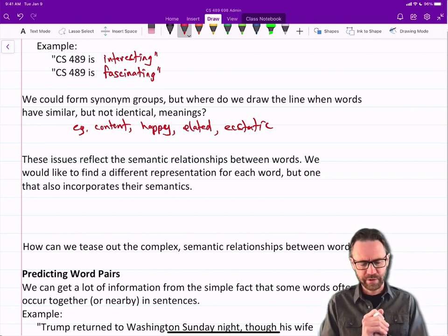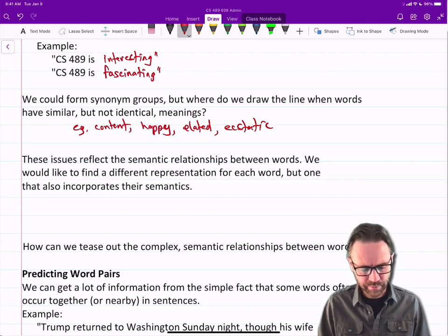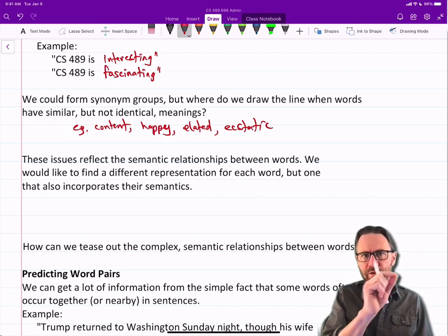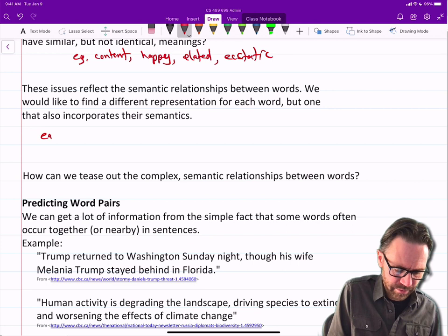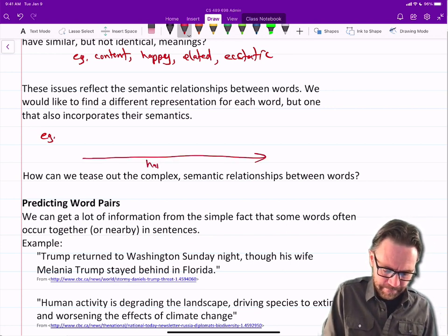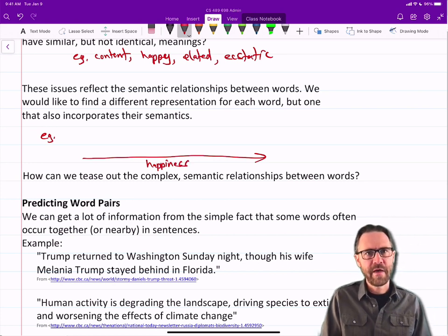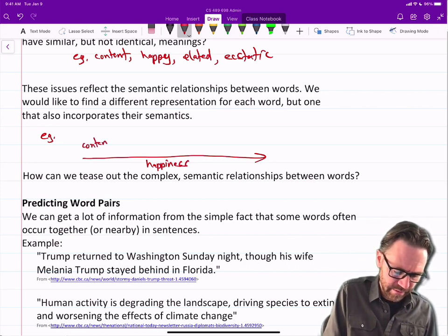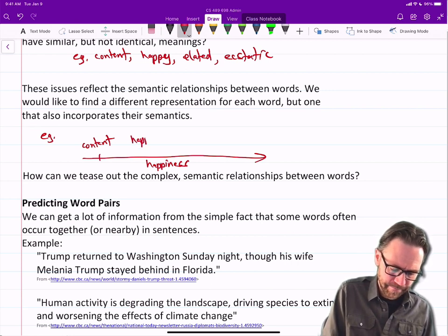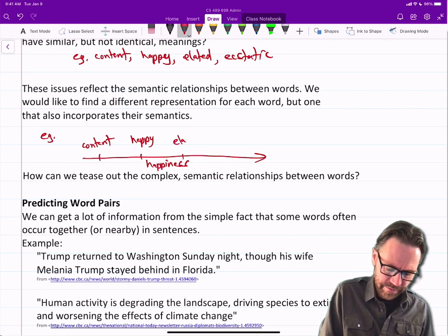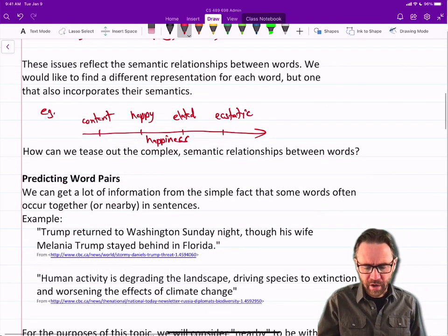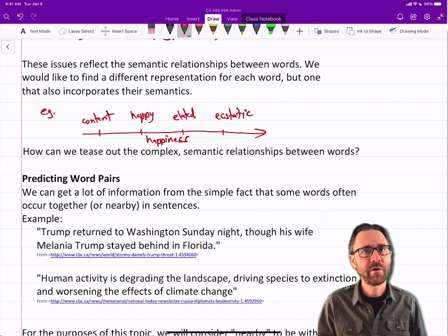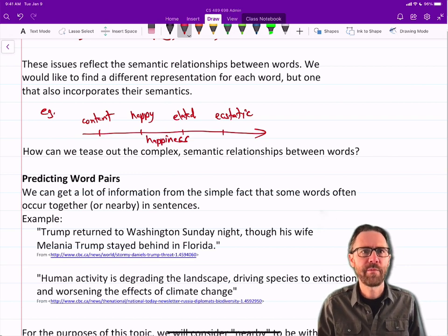Should we have one category for kind of happy, one category for really happy? It's even better though if we could reflect them on some sort of continuum. These issues reflect the semantic relationship between words. We would like to find a different representation for each word, but one that also incorporates their semantics. Those four words for happiness are actually on a continuum. I could create a happiness scale, and then I could say content is down here, then I've got happy here, over here is elated, and over here is ecstatic.